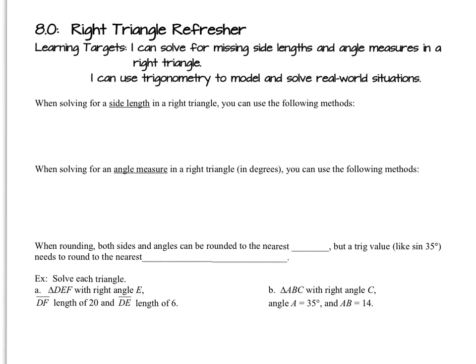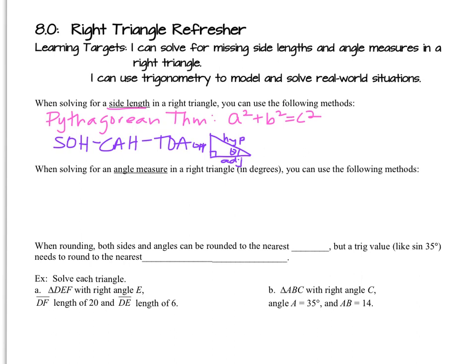Chapter 8 is all about problem solving using trigonometry. We're going to start with 8.0, a little right triangle refresher. When given a right triangle and you're asked to find a certain side length in that triangle, we have these options for solving.